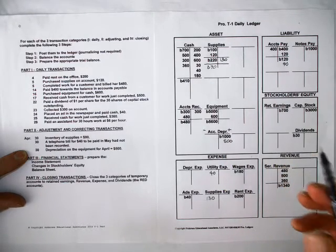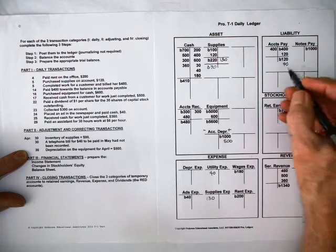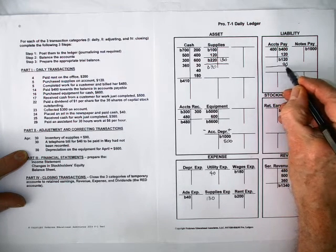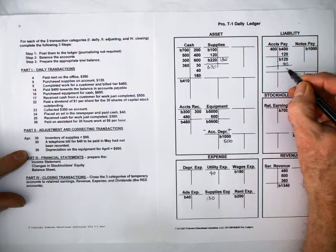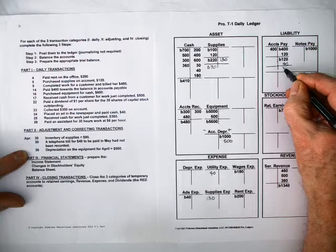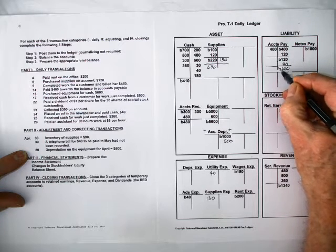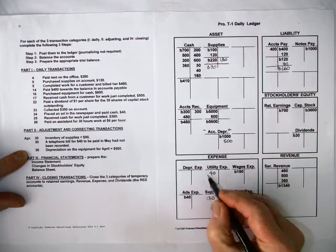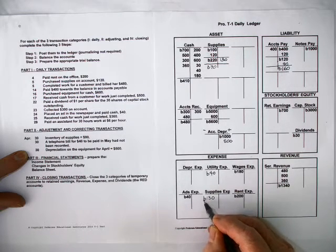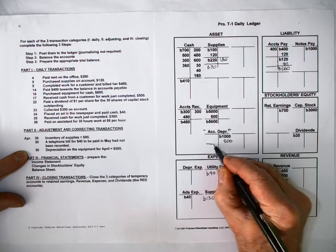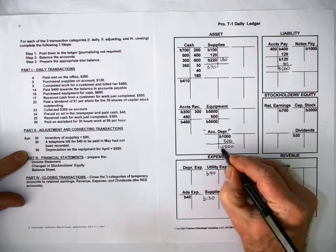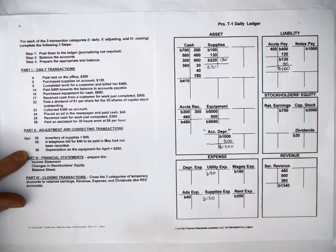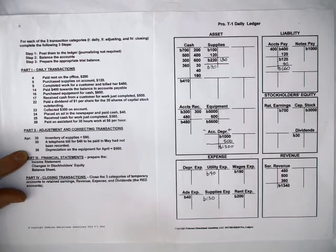One more step before we can do our adjusted trial balance is we've got to balance these accounts — the ones that received the adjustment or the correction. This new balance here is $160. We'll put a B beside it. This balance here has been corrected — put a balance beside it, and then we have to balance this account here. $1,500 for balance. So we've got everything taken care of here. Now we're ready to do our adjusted trial balance.